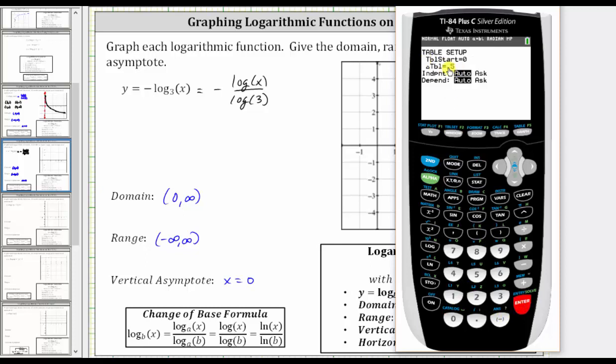The change in the table is by point five, which is fine. We want both independent and dependent variables to be on automatic, which they are. So now if we press second graph, we can scroll down the table and find convenient points.